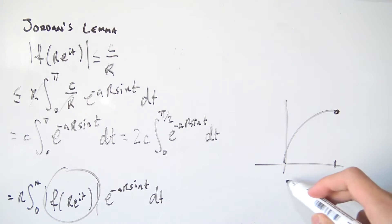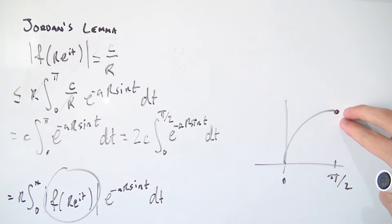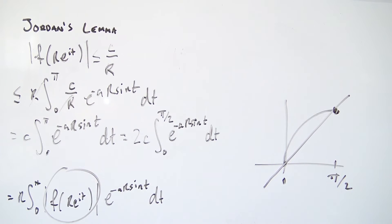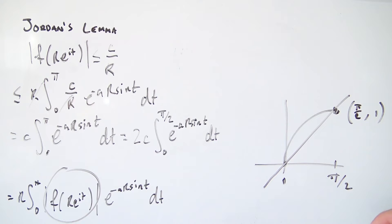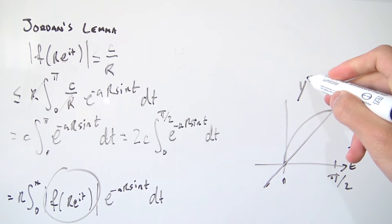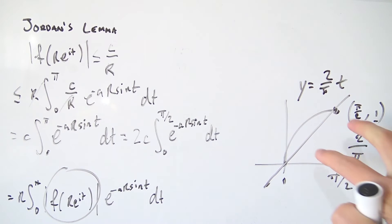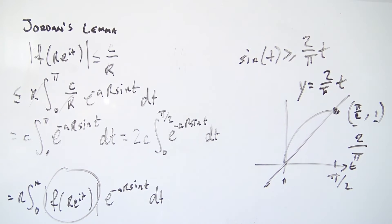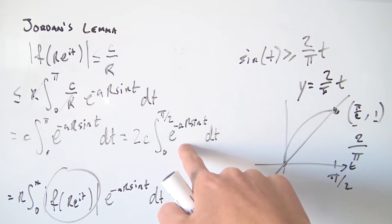On the interval [0, π/2], the sine function has a local maximum, and if we construct a straight line from the origin to that maximum point (π/2, 1), the slope is 1/(π/2) = 2/π. From the picture we can see that sin(t) ≥ (2/π)t on this interval. So the equation of this bounding line is y = (2/π)t, and sin(t) is always greater than or equal to (2/π)t on [0, π/2].